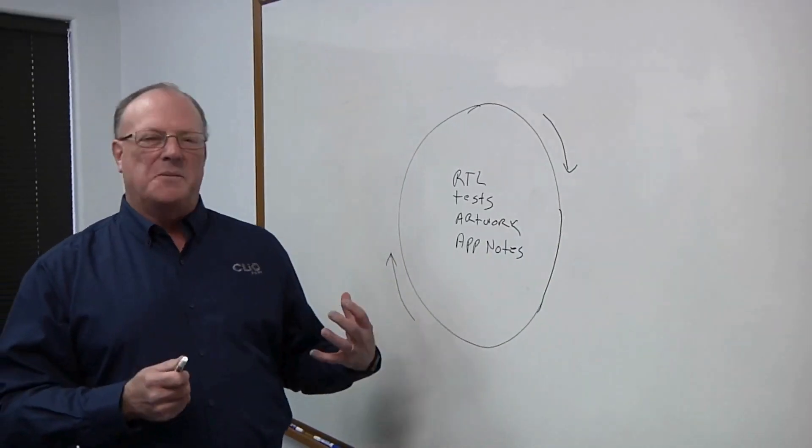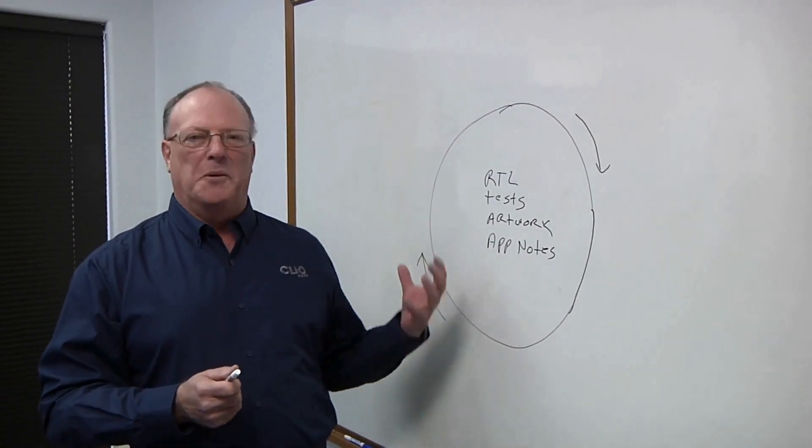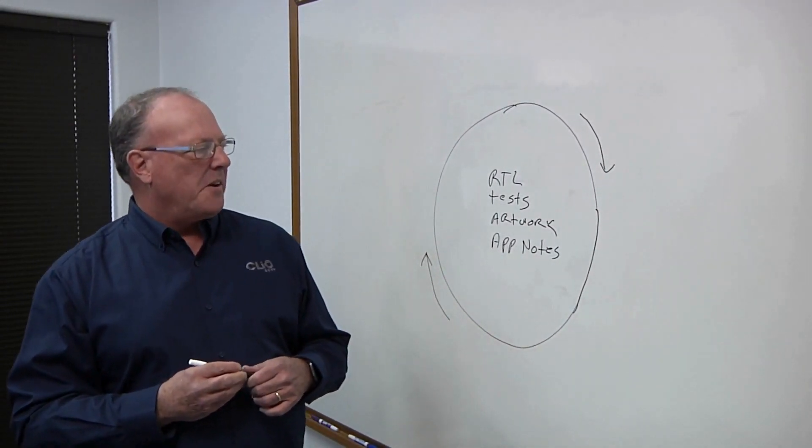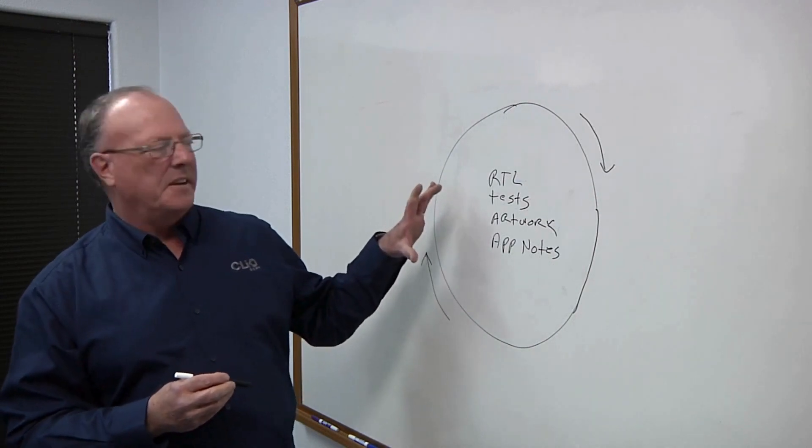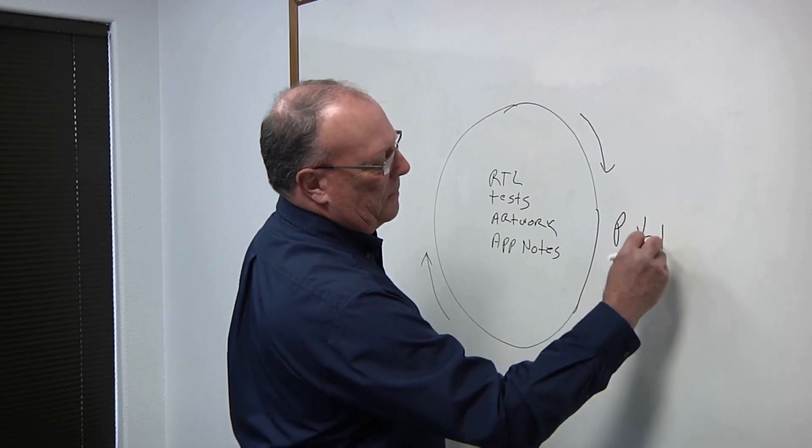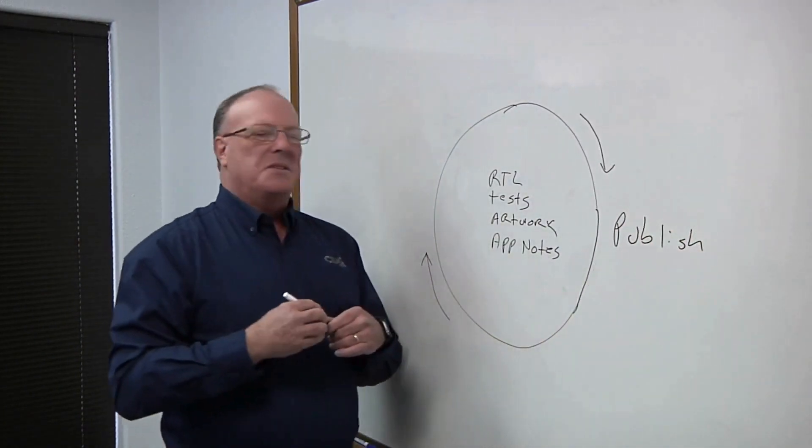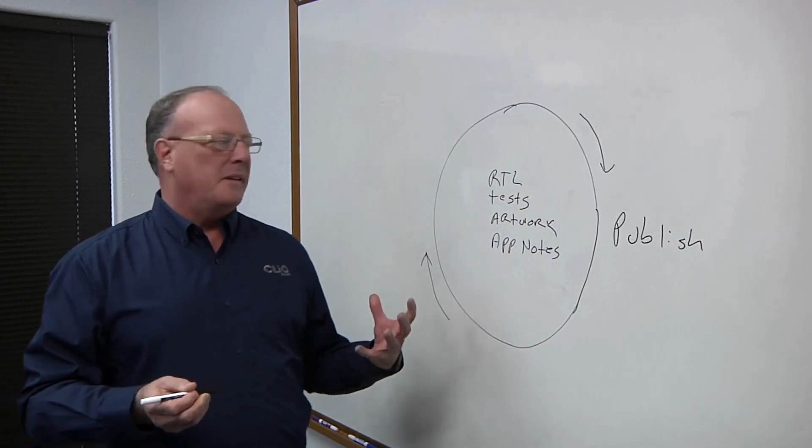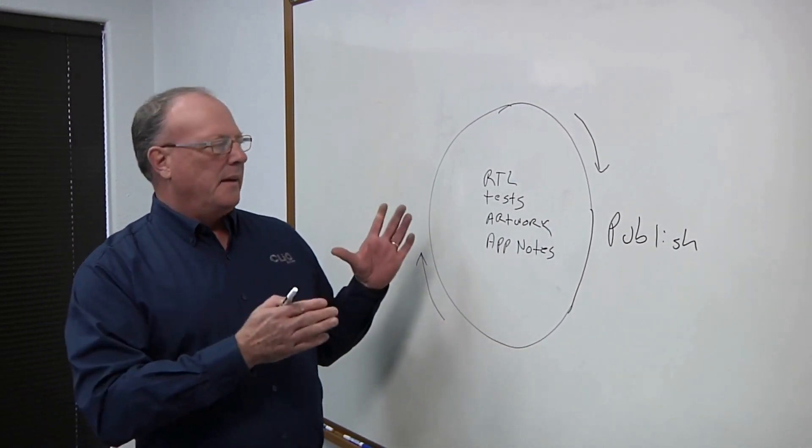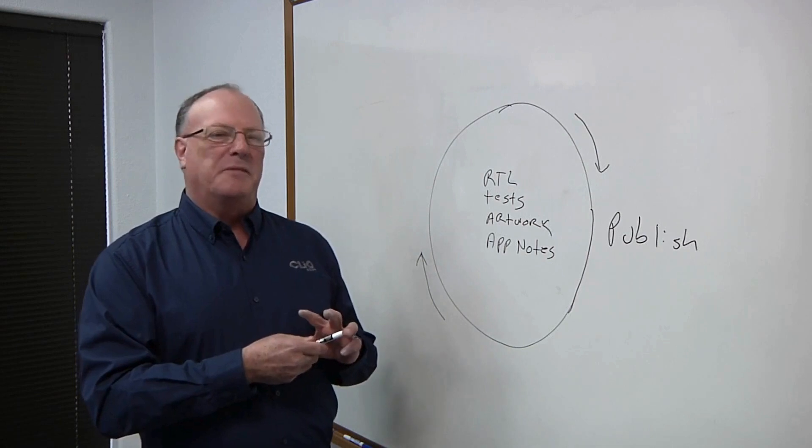So basically, when you start to do IP reuse, there's sort of a flow that a lot of companies come to eventually. And it starts with what are the assets that you're going to have? And that's sort of where you start with publishing. So when you publish, depending on the type of IP that you have, you have various assets that you need to bring into some system somewhere that people can find and access.